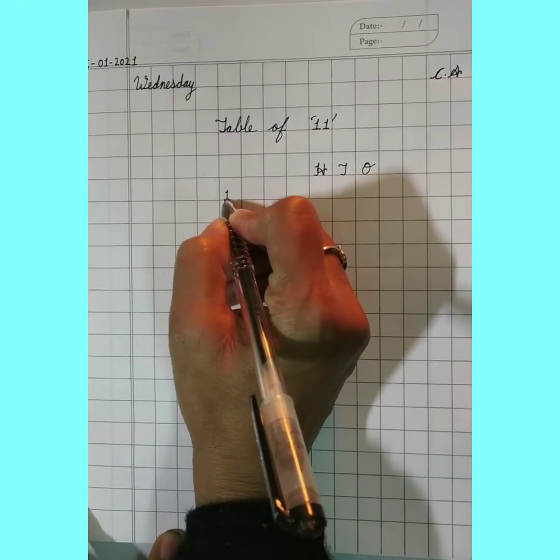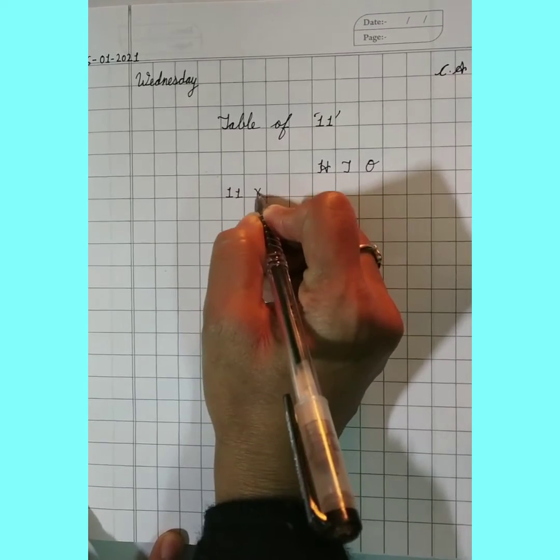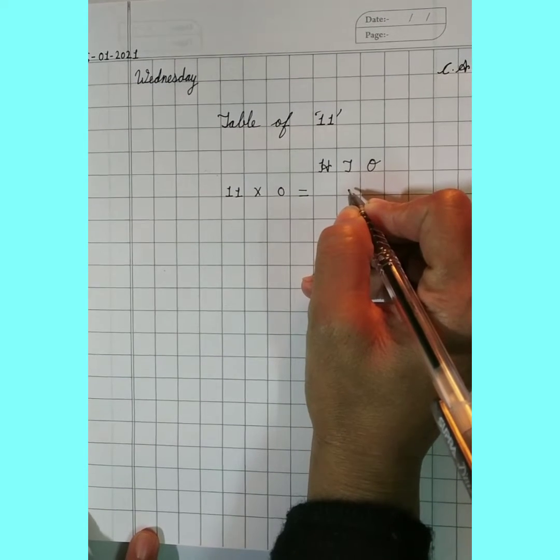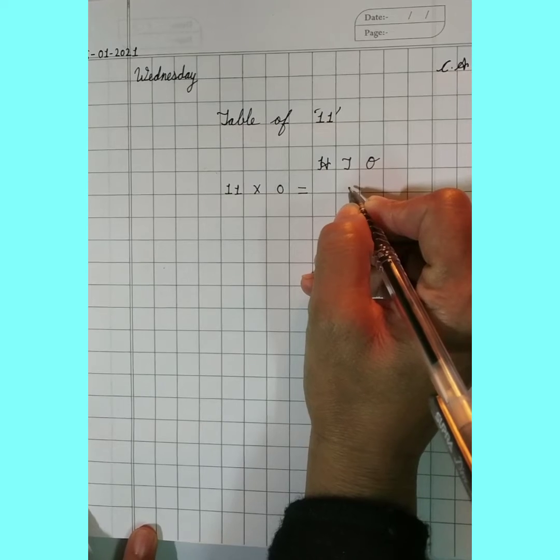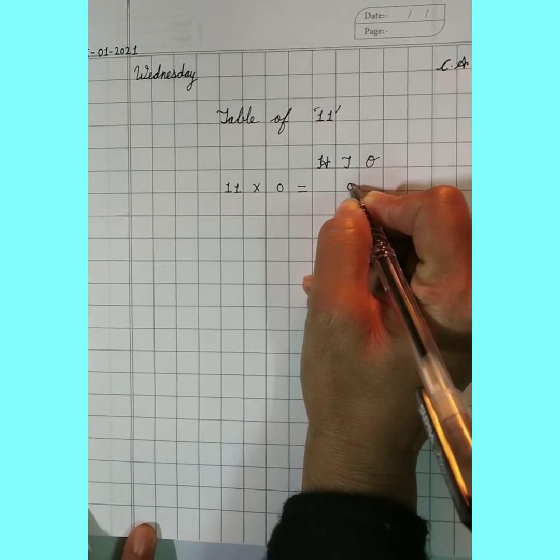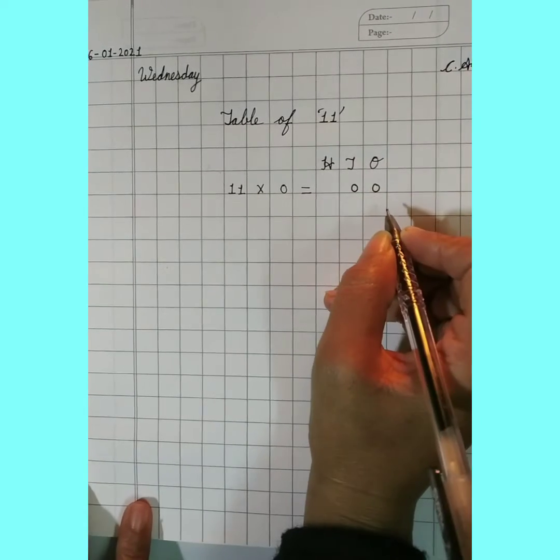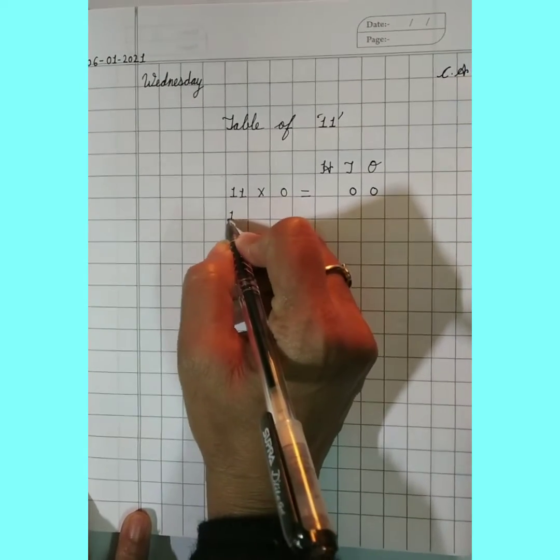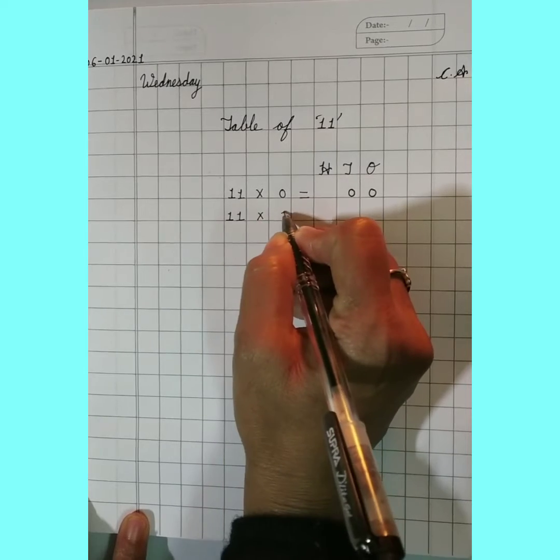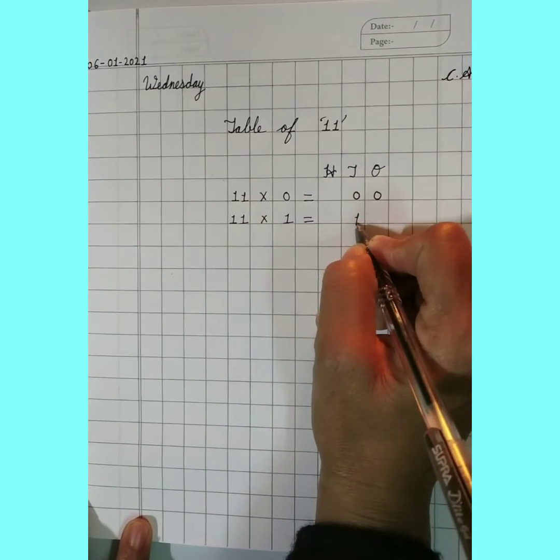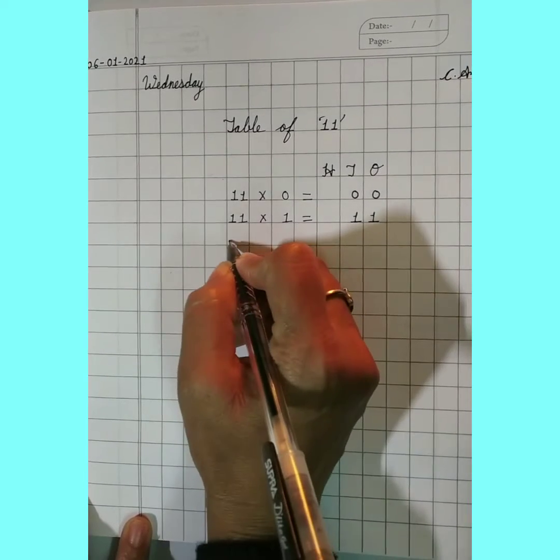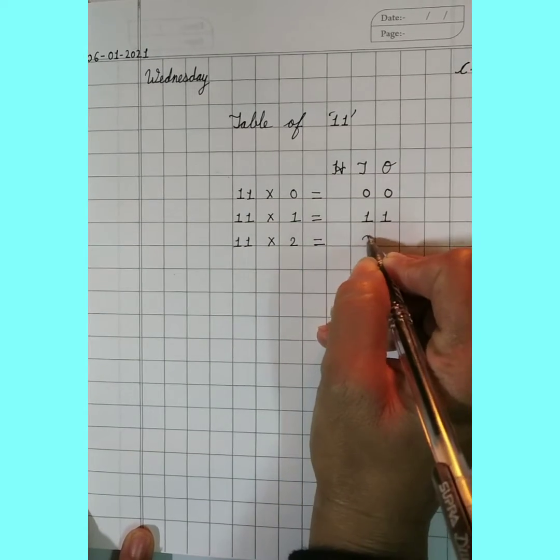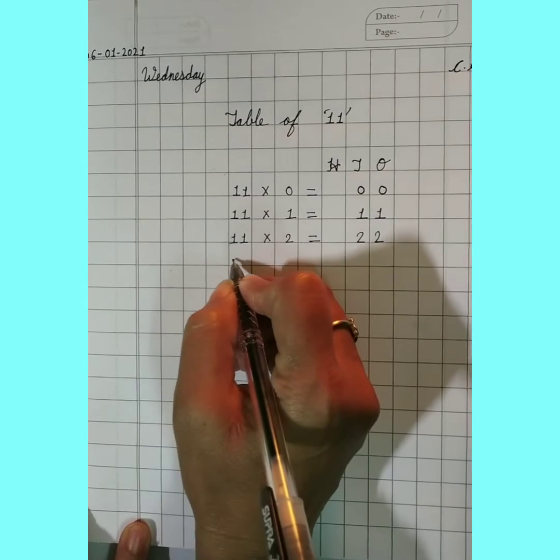Firstly we will multiply 11 by 0. If we multiply 11 by 0, it equals 0. Now next, 11 by 1 equals 11.